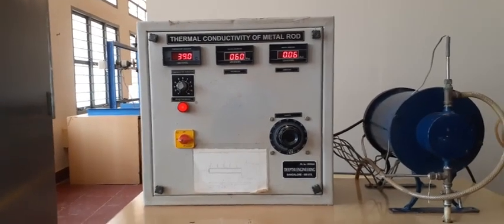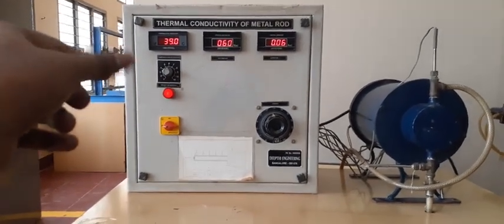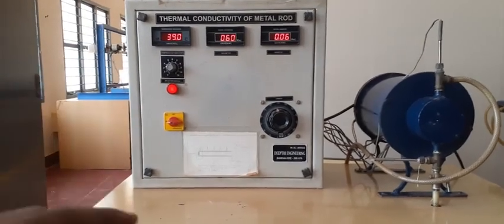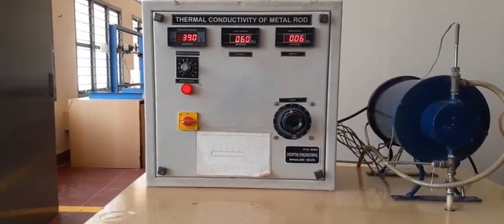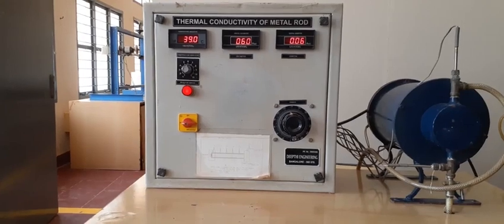Then from the switch indicator, we can find the various temperatures T1, T2, T3, T4, and T5. Once the temperature is noted down, we will go to the tabular column.